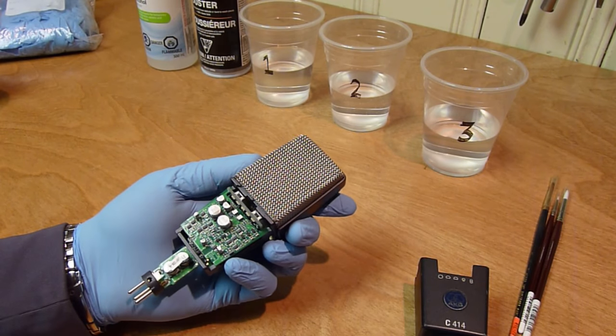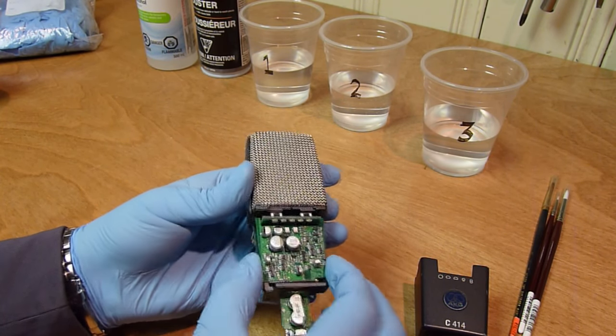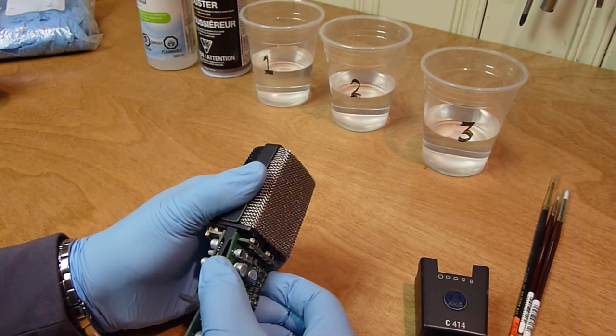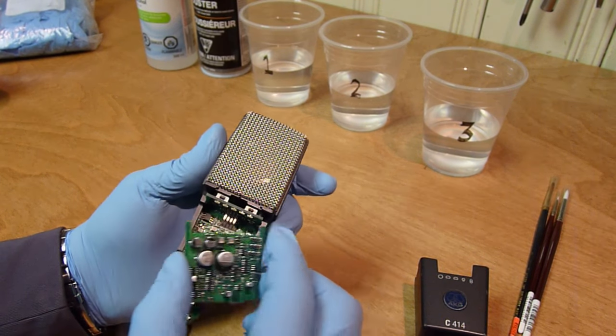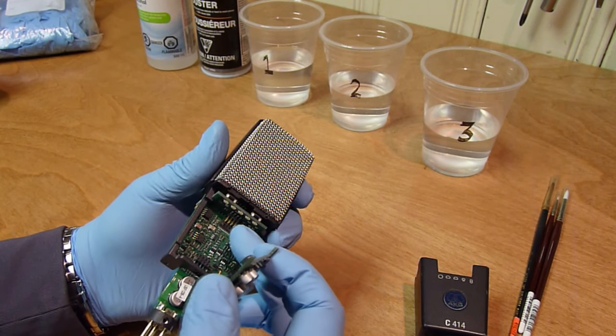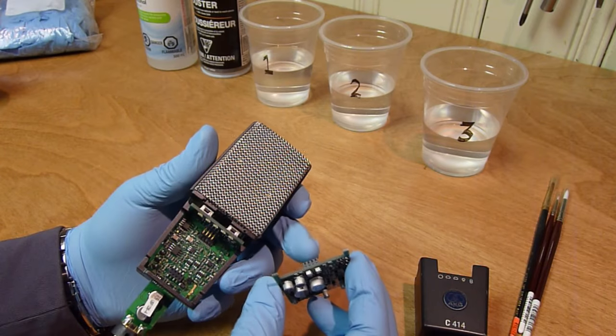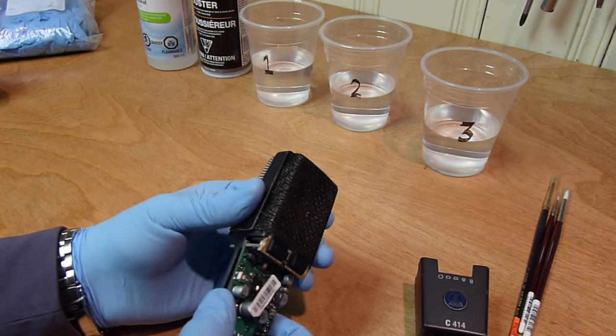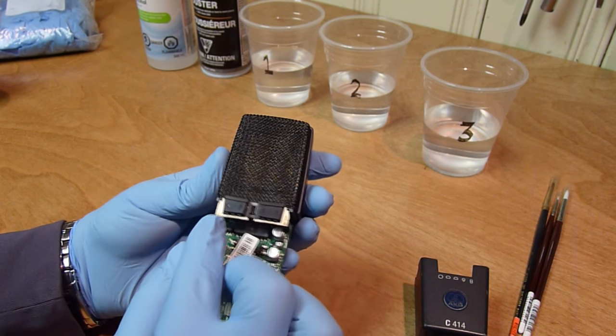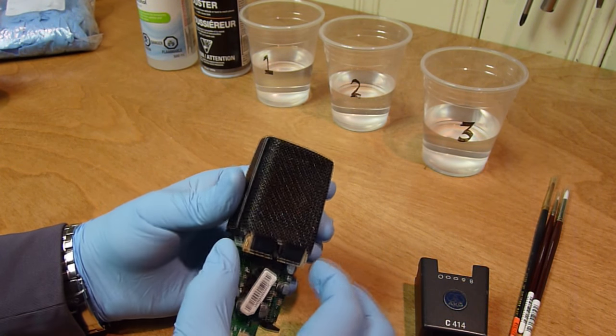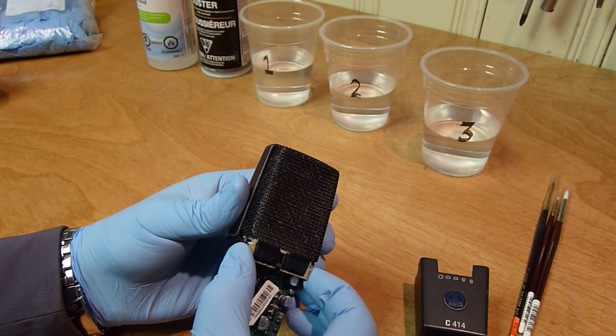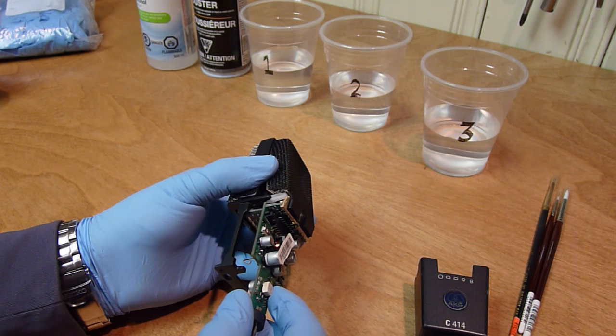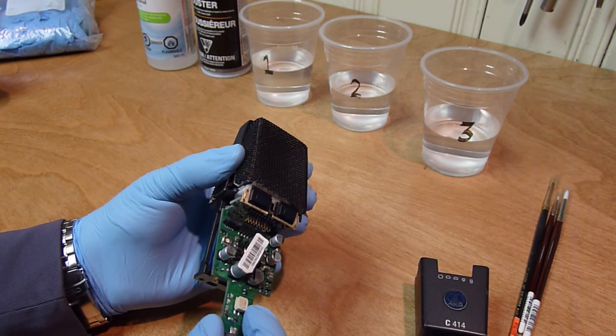Now this allows me to take the amplifier board out. As you can see this is held in just a pressure fit with some pin connectors. Put that aside. Now I can take the roll off and pad switches and pull them out, and that allows me to get this board out.